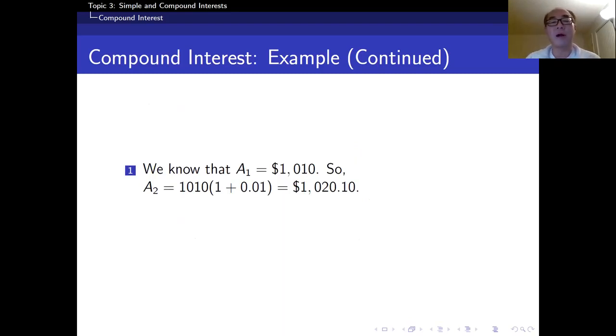Here's what's going to happen. We know that A sub 1 equals $1,010. A sub 2 is, now A sub 1 is a new principle, that's why I have 1,010 at the front. Then I multiply by (1 + 0.01), which is $1,020.10. Similarly, A sub 3 equals, now the principle is $1,020.10 times (1 + 0.01), which is $1,030.30.